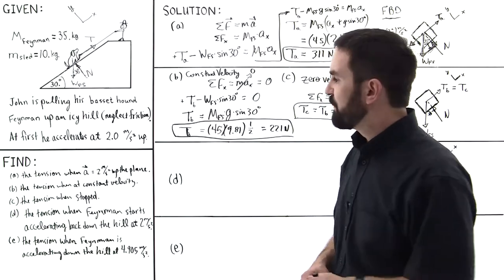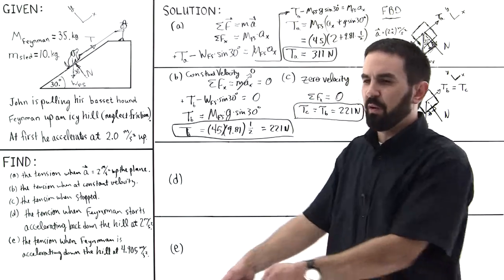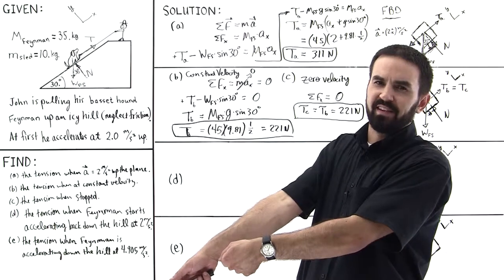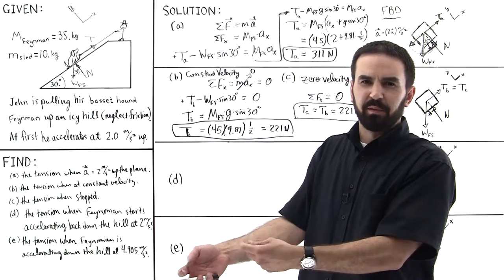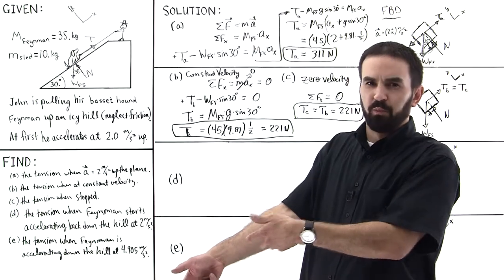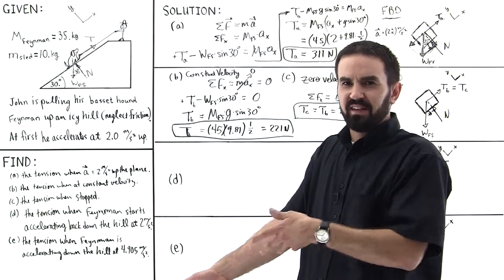In part C, Feynman was just stopped and John was just holding him there like this. But John is starting to sweat some, his hands are becoming sweaty, and so the rope starts to slip through his hands.